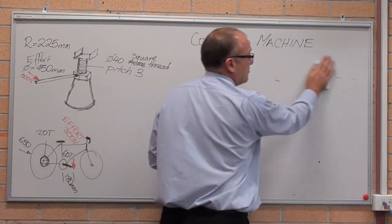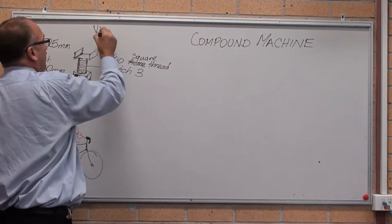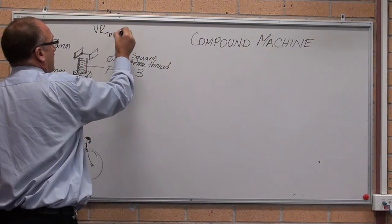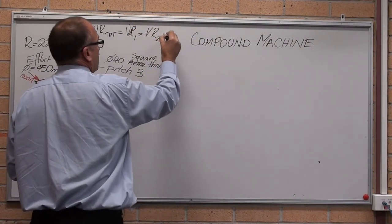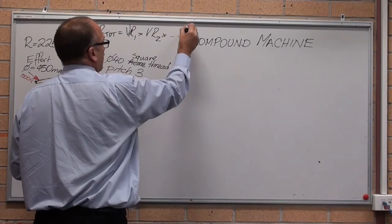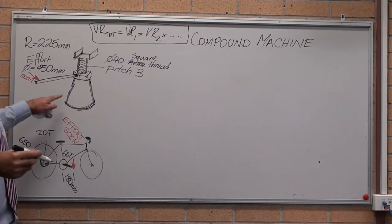I'm just going to delete this to give me some working space. I'll put it up the top, VR total is VR 1 times velocity ratio 2. Okay, let's have a look at this screw jack.